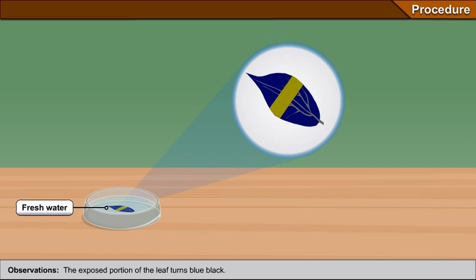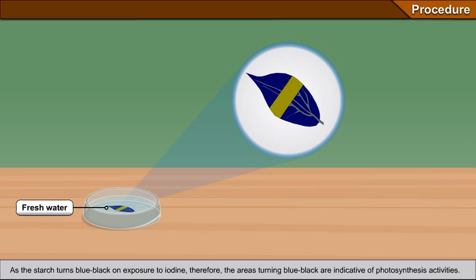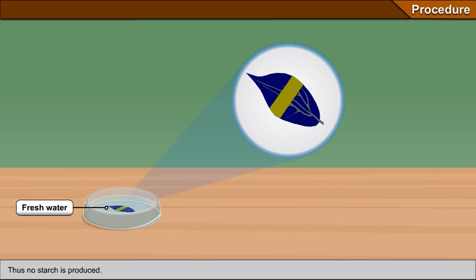Conclusions: One of the end products of photosynthesis is starch. As the starch turns blue black on exposure to iodine, therefore, the areas turning blue black are indicative of photosynthesis activities. No photosynthesis takes place in the areas which were covered with black paper. Thus, no starch is produced. This experiment clearly demonstrates that sunlight is essential for photosynthesis.